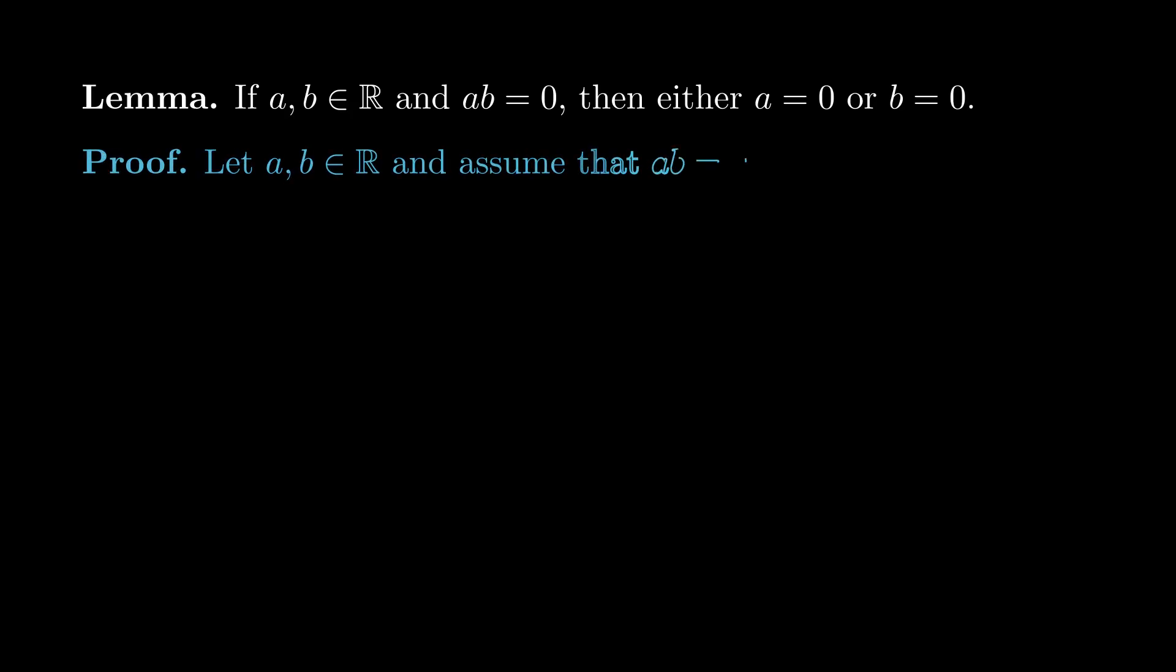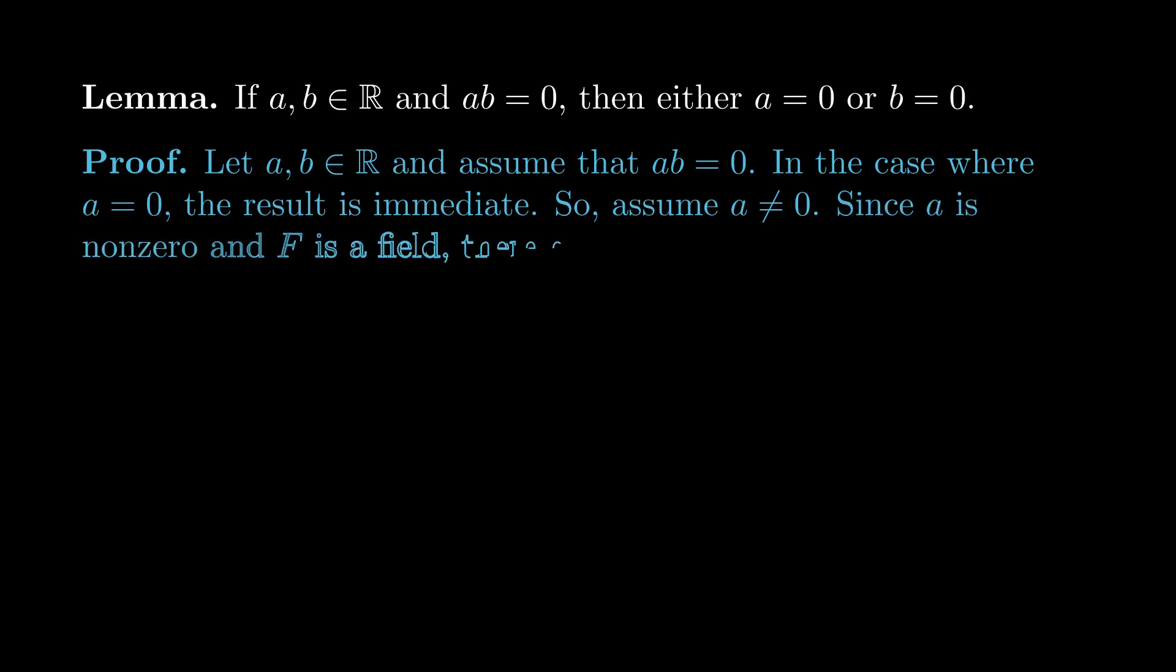Let a and b be real numbers, and assume that ab is non-zero. In the case where a = 0, the result is immediate. So assume a is non-zero. Now we need to show that b = 0. Since a is non-zero, there exists a multiplicative inverse, 1/a, satisfying a × (1/a) = 1.